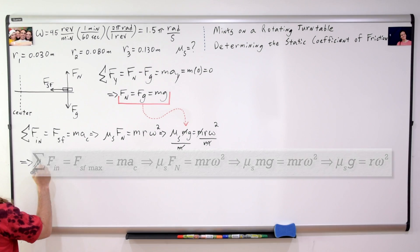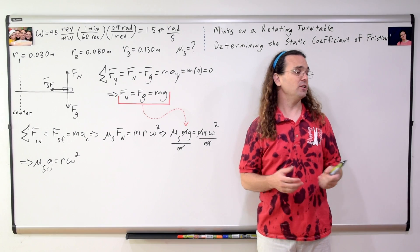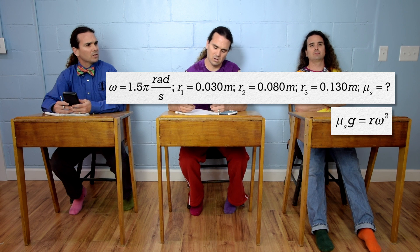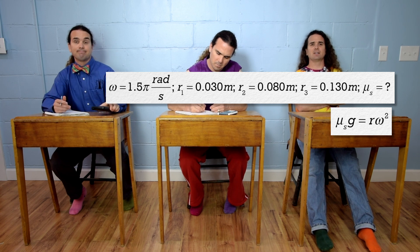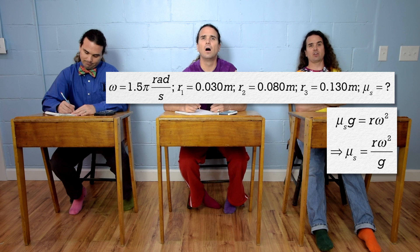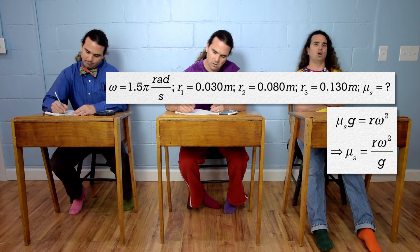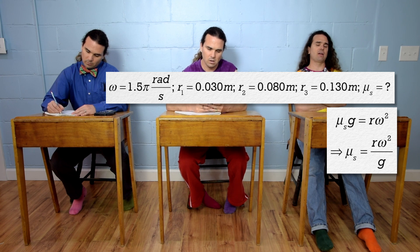Billy, please finish the problem. Oh, come on. I was almost done. Okay, Bo. Go ahead. We now know the static coefficient of friction equals radius times angular velocity squared, all divided by acceleration due to gravity.